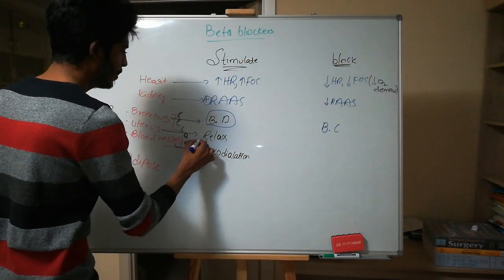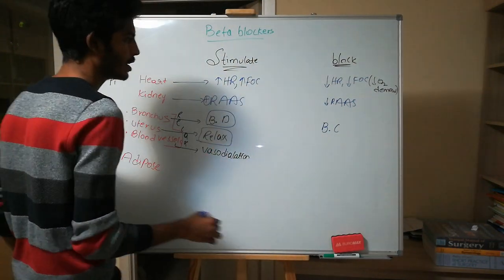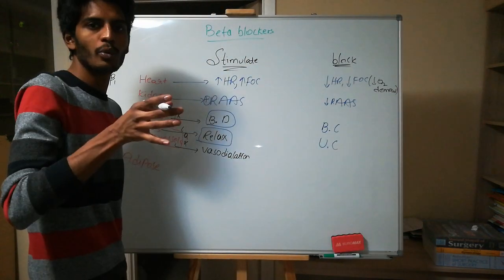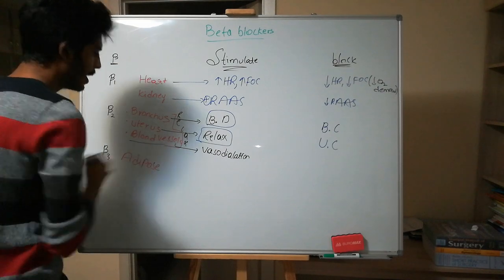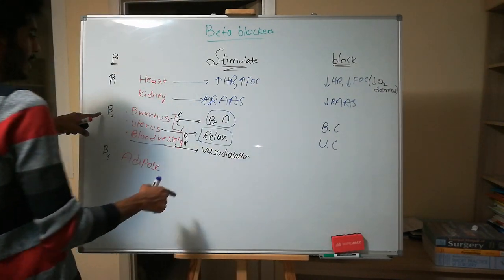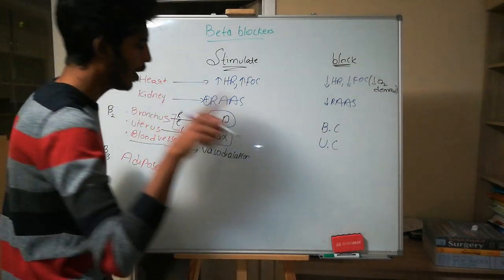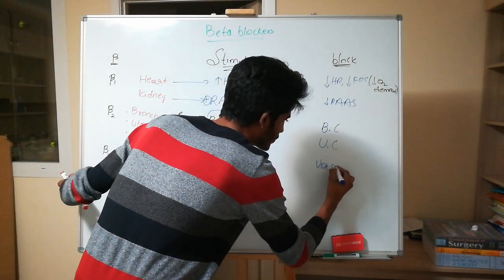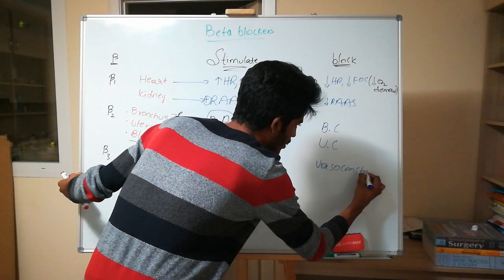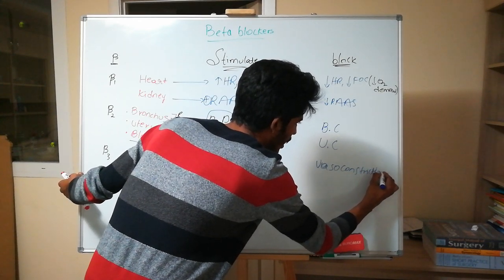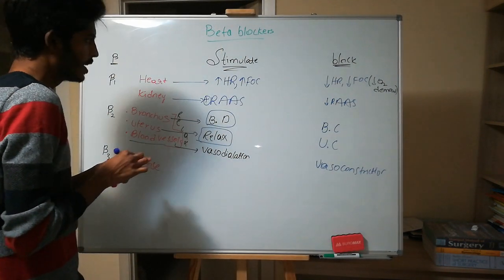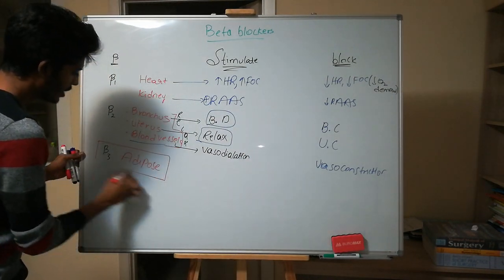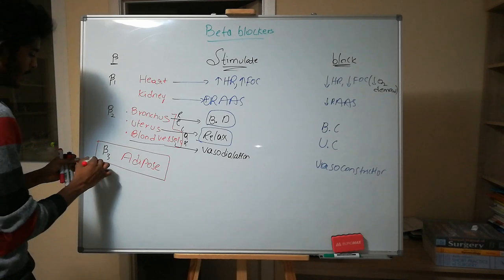When beta 2 is blocked: bronchoconstriction occurs, uterus will contract — the smooth muscle of the uterus will start to contract — and blood vessels will constrict, causing vasoconstriction. As for beta 3 receptors in adipose tissue, we don't have drugs dealing with them, so we won't discuss beta 3 further.